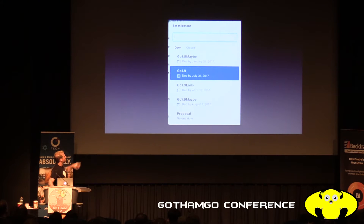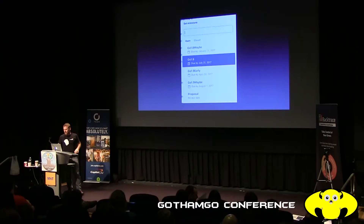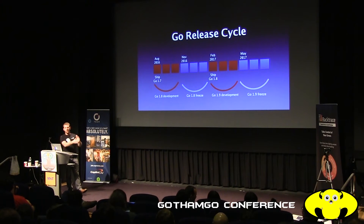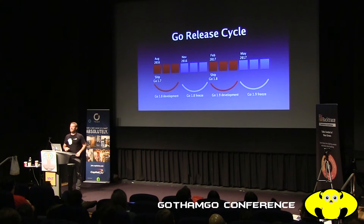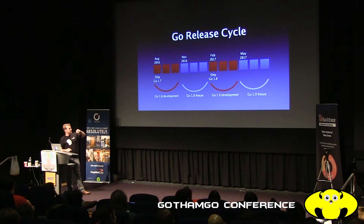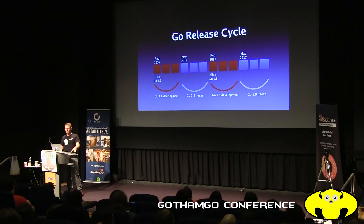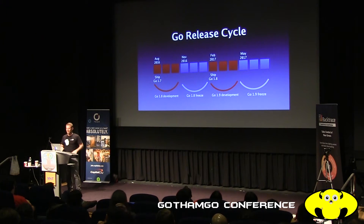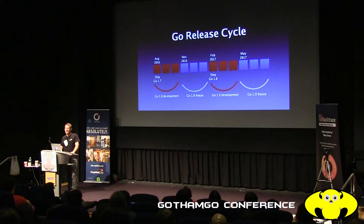We also use the milestone feature on GitHub. Instead of just saying 'this will be in 1.8 or 1.9,' we say which part of the release cycle it targets, or the likelihood we'll get it in. The release cycle is six months long — the first three months is active development, trying to fix as many bugs and add as many features as possible. We have a plan about major items each cycle.